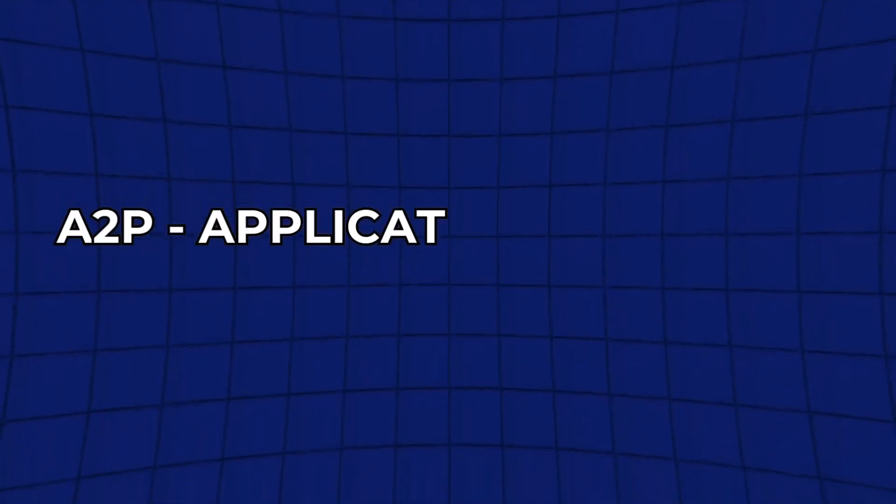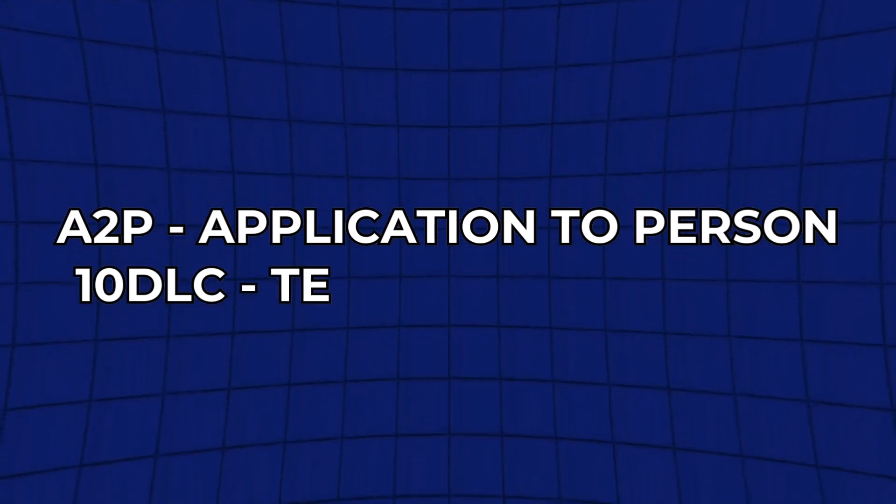Before we get too deep into GoHighLevel and actually show you the approval process, I want to briefly explain what A2P 10DLC registration actually is. A2P stands for application to person, and 10DLC is for 10-digit long code, meaning phone numbers. Basically, this means you can register your phone number to be able to text people from a software like GoHighLevel — application to person.